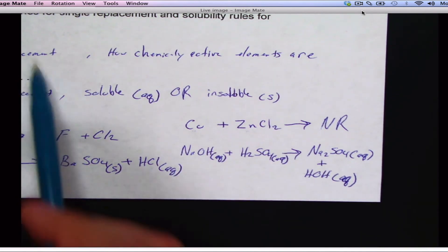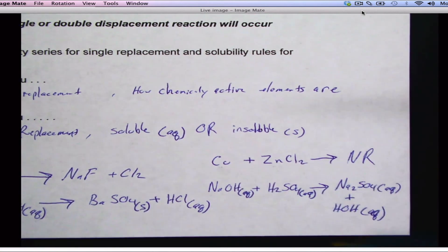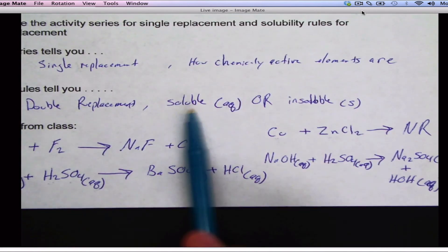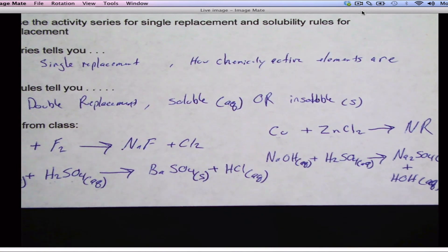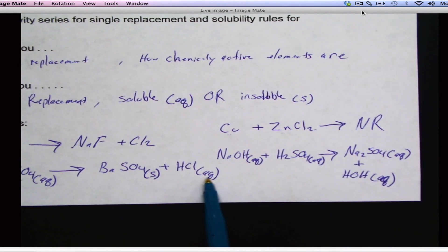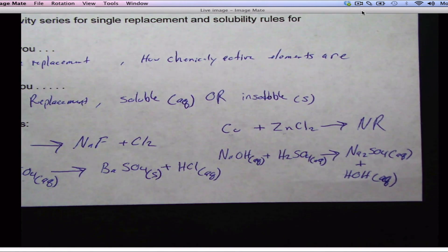So, keep those in mind. So, activity series tells you how, for single replacements, which ones are going to switch, or which ones aren't going to switch. Remember, the lone element has to be higher. And then, the solubility rules, well, the solubility rules tells you which one is soluble, which one is not soluble. In other words, which one is going to form a solid, which one is not going to form a solid. And the one that is insoluble should be your solid. Everything that is soluble should be AQ next to it. Alright? So, hope this helps. And we'll talk to you guys later. We'll do a lot of these in class. Have a good one.